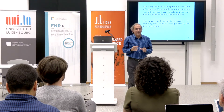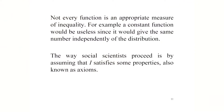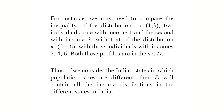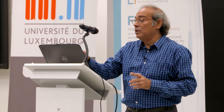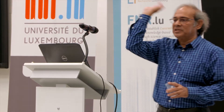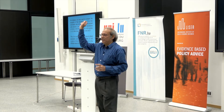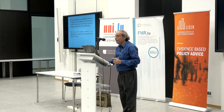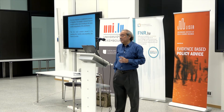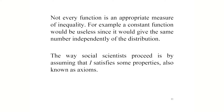Not every function can be an inequality index. A constant function would be ruled out since it gives the same number independently of the distribution. For example, if I(1, 3) = 0.1 and I(2, 4, 6) = 0.1, that is a constant function. But it does not tell us anything about what the actual income differences are. That is why constant functions are ruled out.